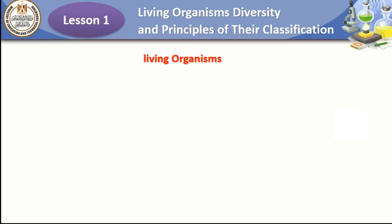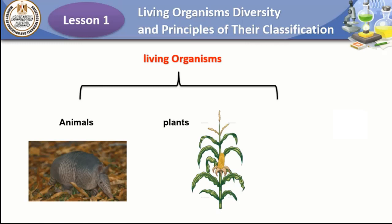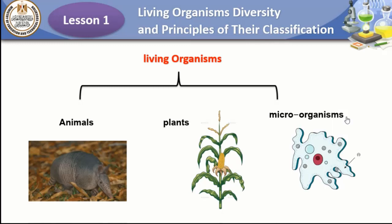What are the examples of living organisms? Living organisms may be animals such as sloths, plants such as corn, and microorganisms such as amoeba. Why are they called living organisms? Because all of them can respire, excrete, reproduce, move, grow, and feed. So they are called living organisms.